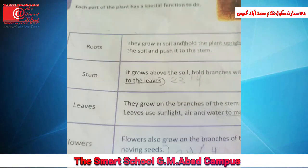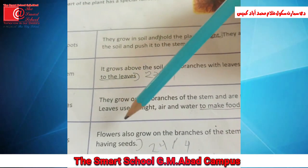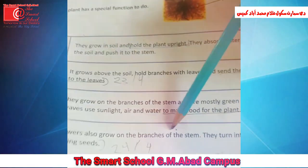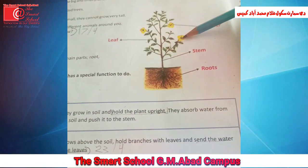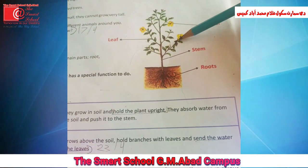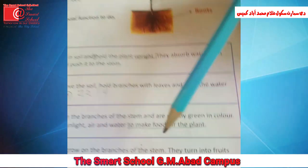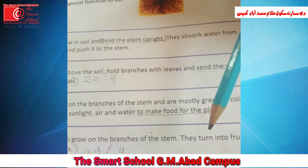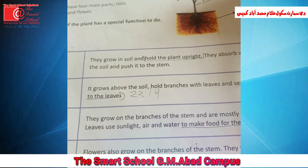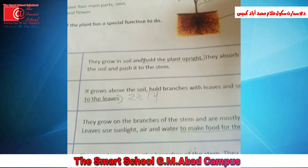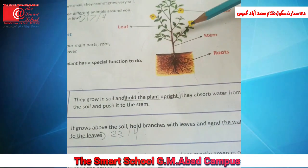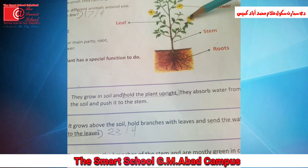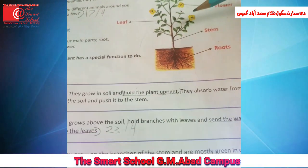The last one is flowers. Flowers also grow on the branches of the stem. As you can see, branches کے اوپر ہی flowers grow کیے ہوئے ہیں، یہ بھی branches کے اوپر ہی ہوتے ہیں۔ They turn into fruits having seeds. یہ flowers ہوتے ہیں وہ fruit میں change ہوتے ہیں اور ان کے اندر seeds ہوتے ہیں۔